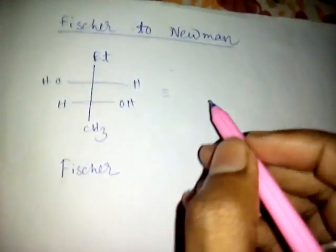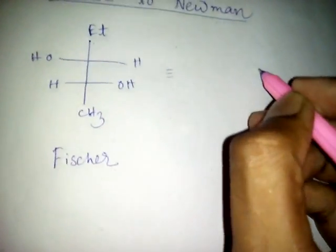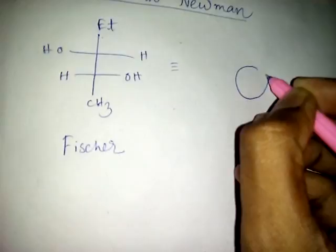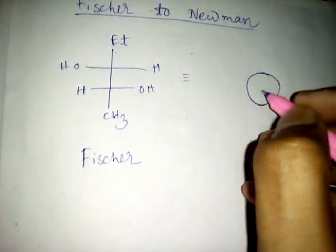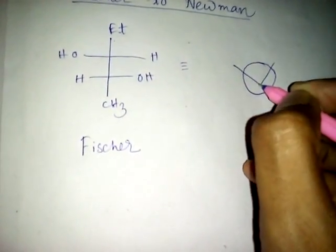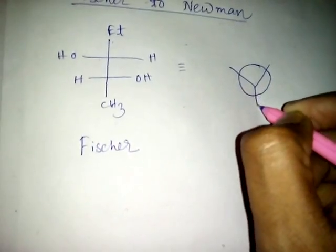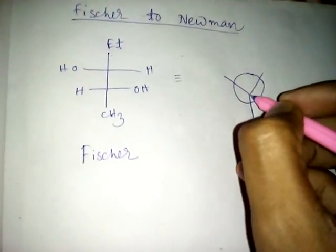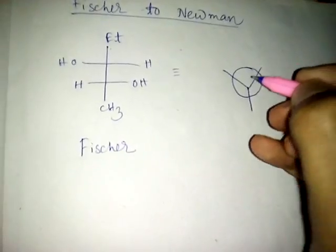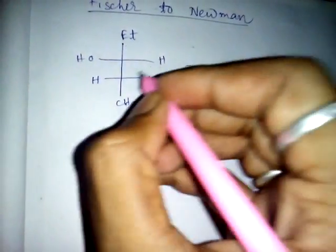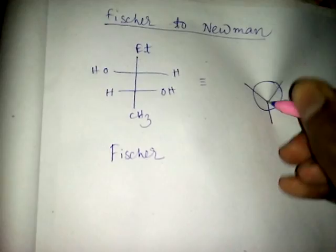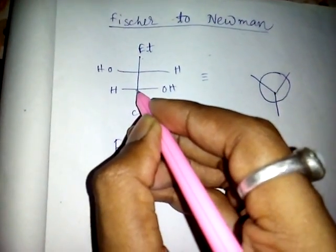At first we need to draw a circle. Then the front carbon — it is on-site, the carbon center. This carbon center is the carbon center.